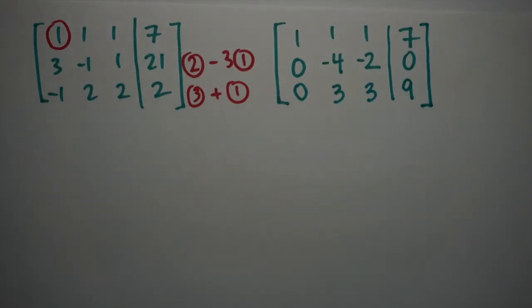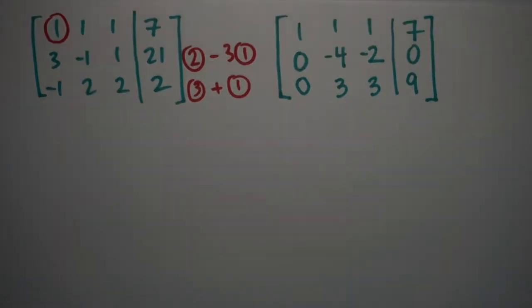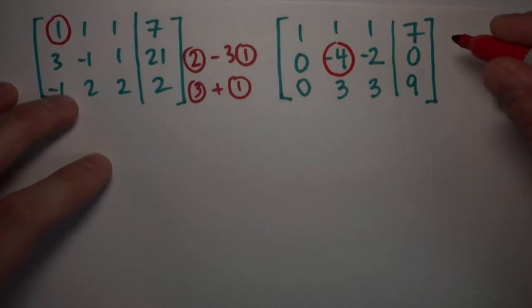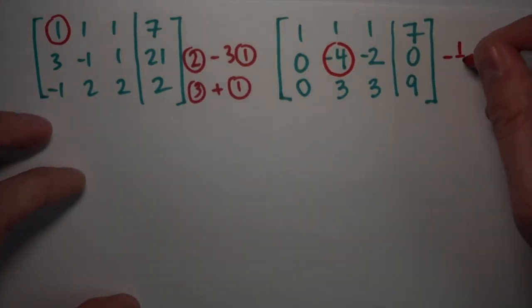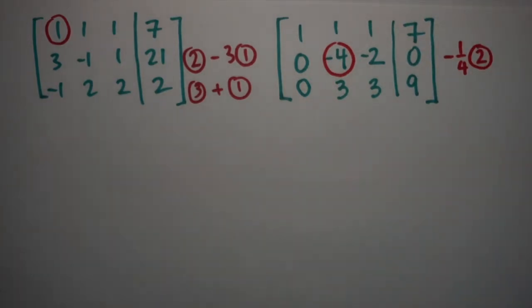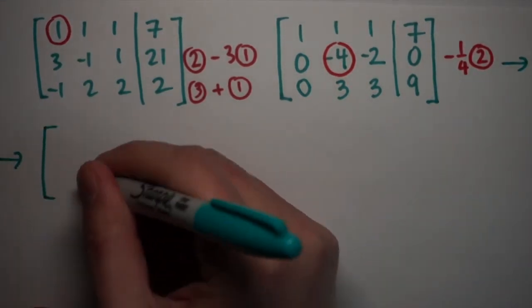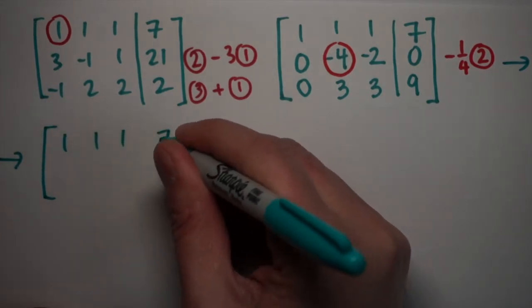The next step will be to take the second column and make it so that there's a one in the middle position, and a zero above it and a zero below it. This will be easiest to do if that negative four there is actually a one. And so I'm going to take my second row and multiply by negative one quarter, negative one fourth. That'll change the minus four into a one. It'll change the other numbers in the row as well, but it'll give me something that I can use to eliminate the numbers above and below it.